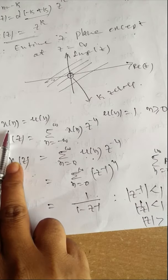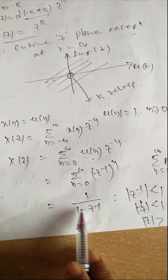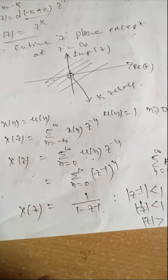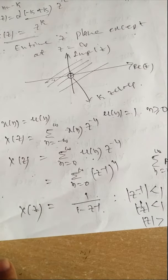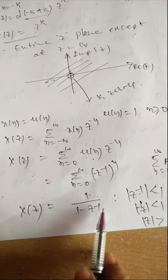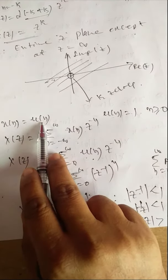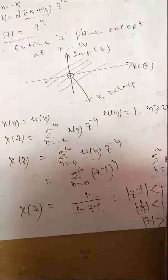The Z-transform of u(n) is 1/(1 - Z^(-1)). This is X(z). This is very helpful when doing inverse Z-transform: when they give X(z) = 1/(1 - Z^(-1)), the inverse Z-transform — that is, the time domain sequence — is u(n).